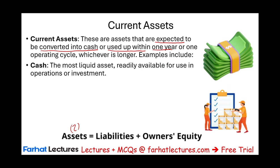What are some examples of current assets? Cash is a current asset because it's already cash — it's the most liquid. Liquid means how fast you can turn an asset into cash. The faster you can do it, the more liquid the asset is. Cash is the most liquid because it's readily available for use, operations, or investment.